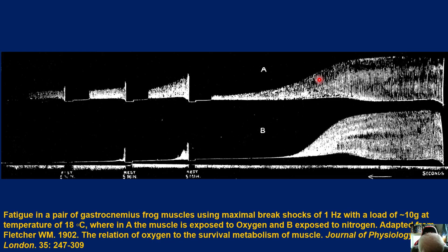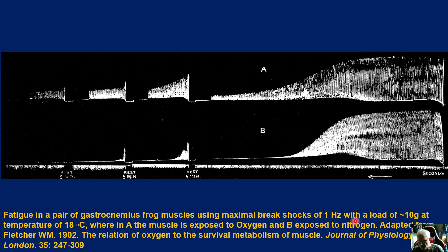This is a really neat connection. Here we have the gastrocnemius muscle from the frog. They've used one hertz — one contraction every second — with a resistance of 10 grams at a constant controlled temperature. So they're not creating a fatigue environment through temperature, but they are applying a little bit of tension on the muscle.